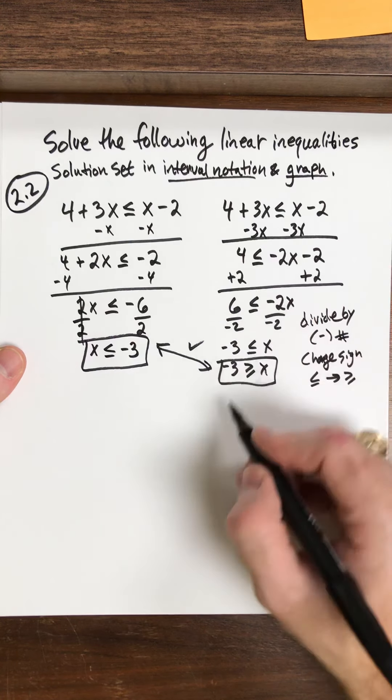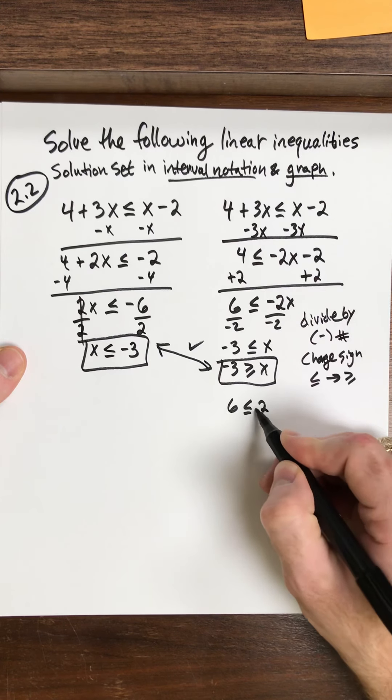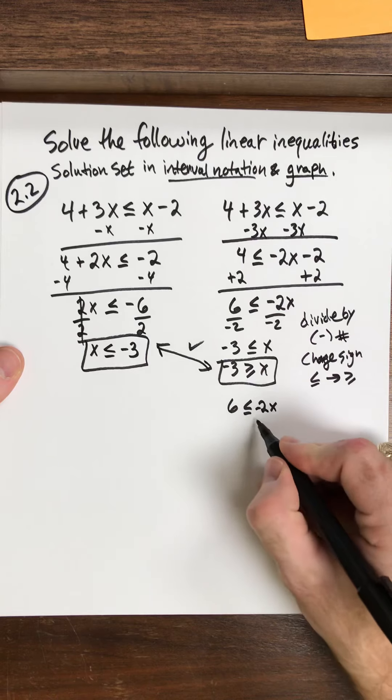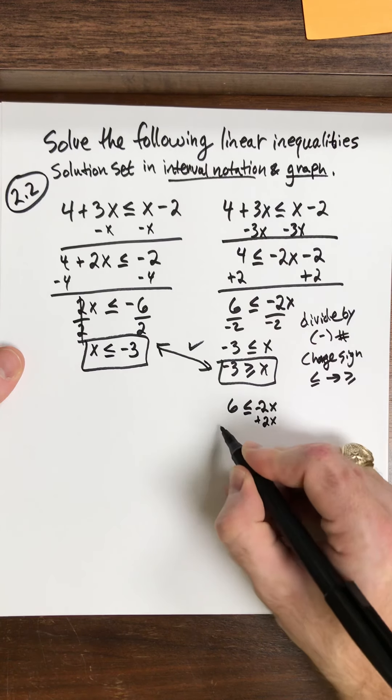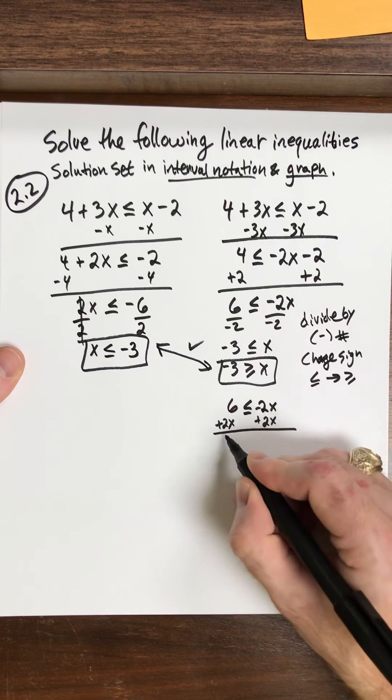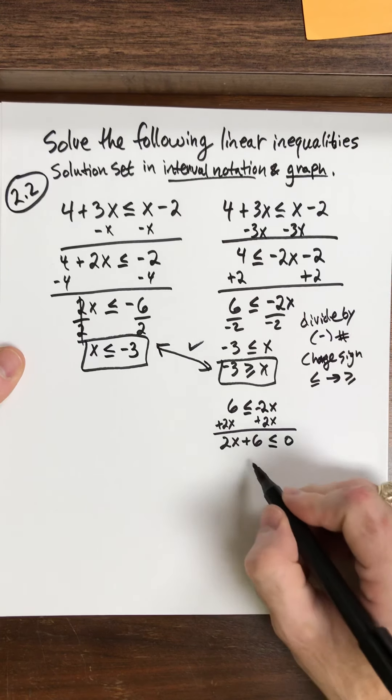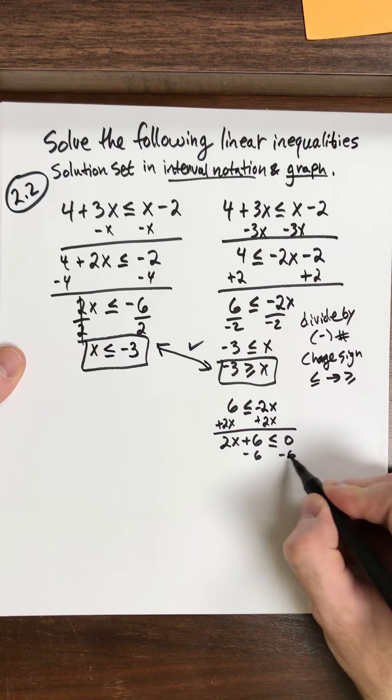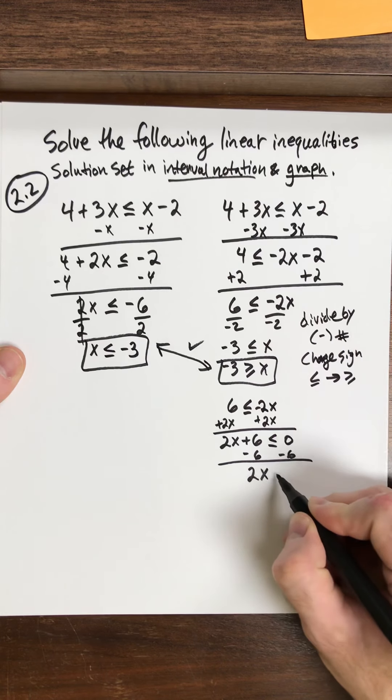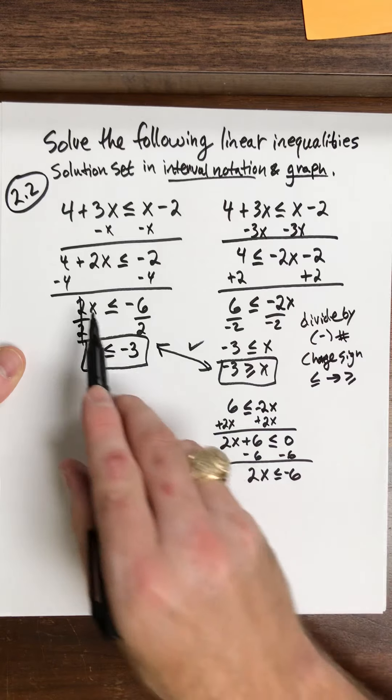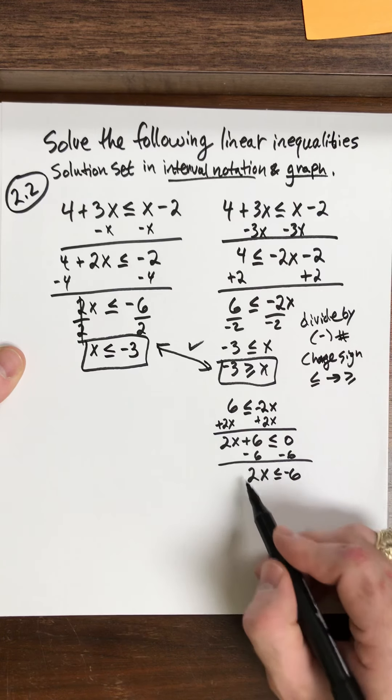Well, if we think about it, if you went back to this, 6 is less than or equal to negative 2x. Okay, how could I move this negative 2x? Well, I could add 2x to both sides and I have 2x plus 6 is less than or equal to 0 and I could subtract 6 and now this gets me back to what I had up here. Okay, and if I divide by 2.